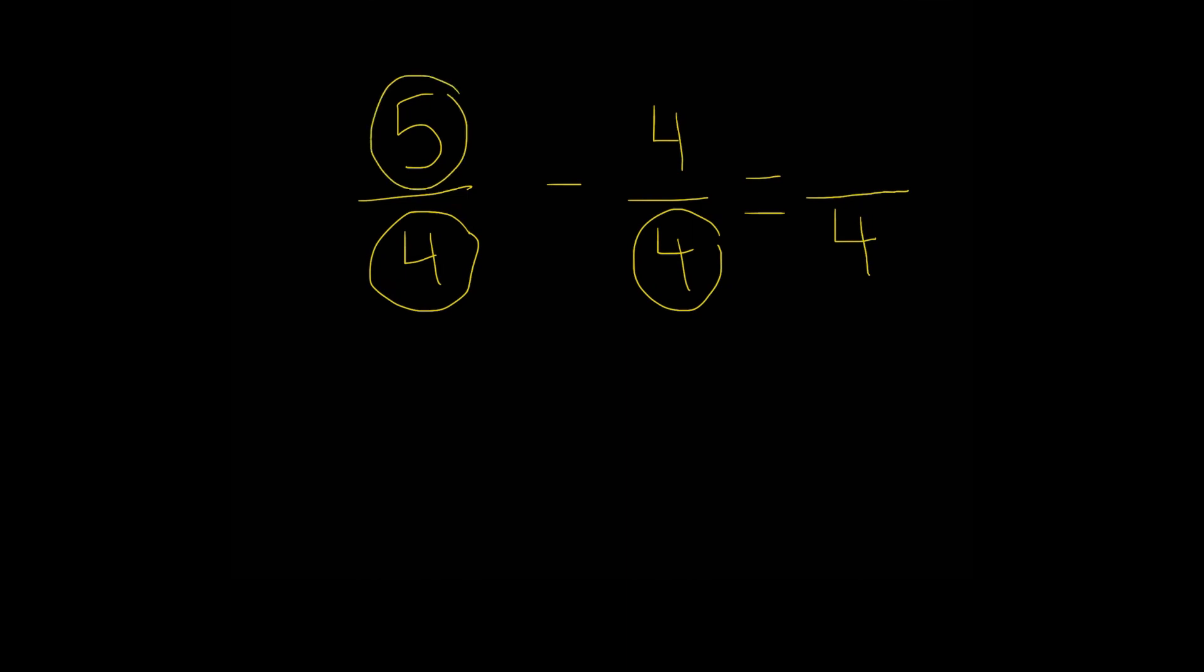And now what we're going to do is we're going to subtract these two numbers, these two numerators. We're going to subtract these two. So what is 5 minus 4? 1. So we're going to write a 1 here for our numerator. And this is our answer.